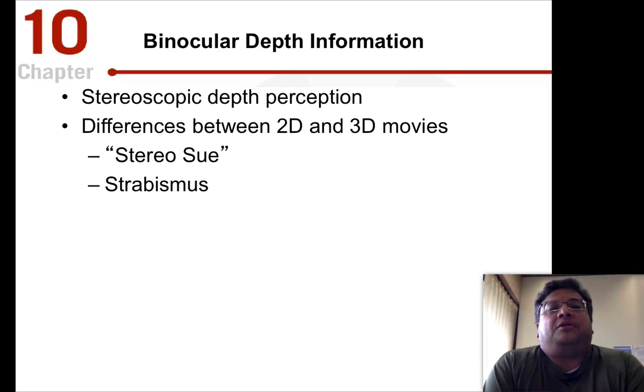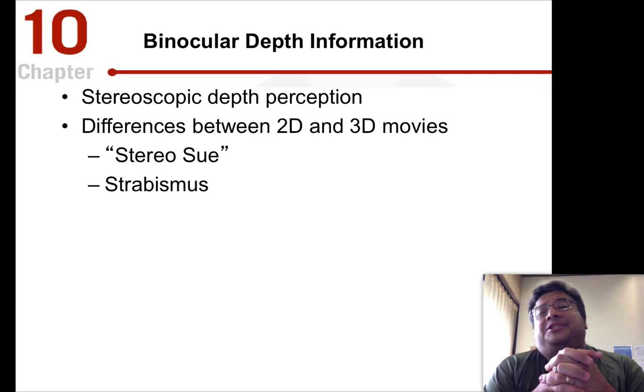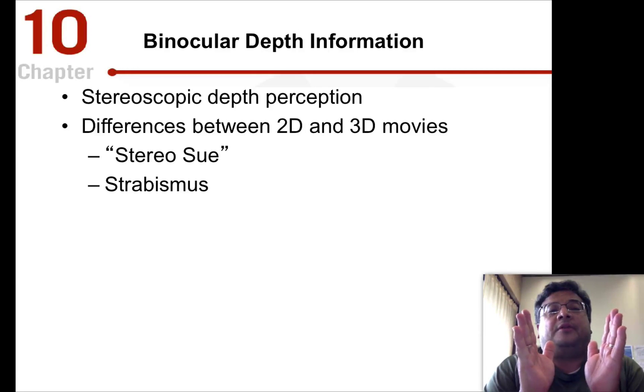Okay, so binocular depth perception. Up to this point, we've been talking about cues that you only need one eye for. Now, we're going to talk about the use of both eyes for detecting distance. And this is, when you talk about two eyes, you're talking about stereoscopic vision. And we use stereoscopic cues for depth perception. You've probably at least once in the last couple years seen a movie in 3D.